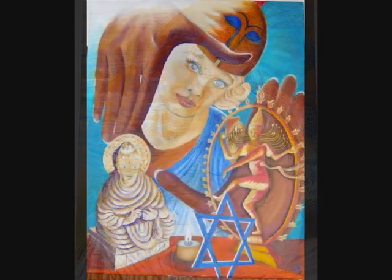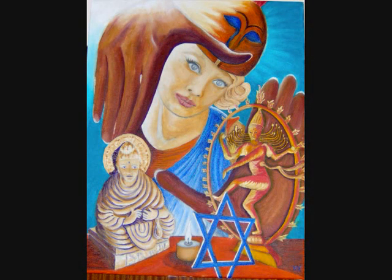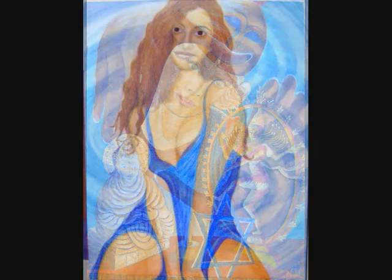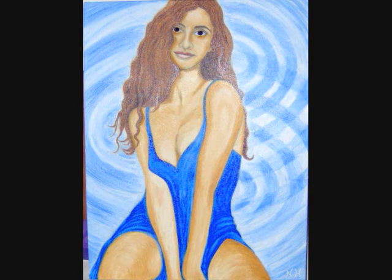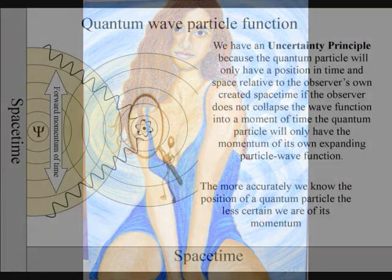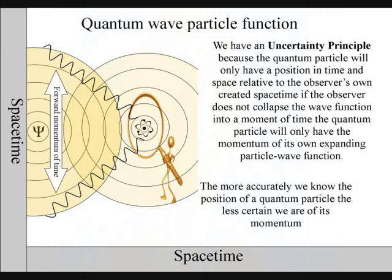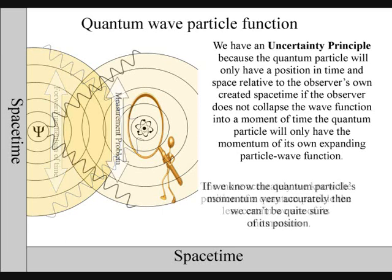The individual observer is the only true reference frame, because they are creating their own time and space, relative to their position and momentum. Therefore, the more accurately we know the position of a quantum particle, the less certain we are of its momentum. And if we know its momentum very accurately, then we can't be quite sure where it is.